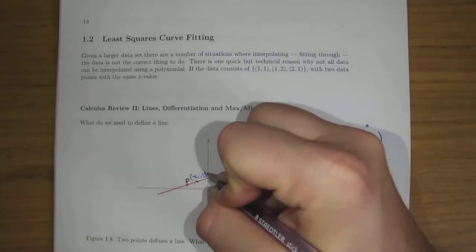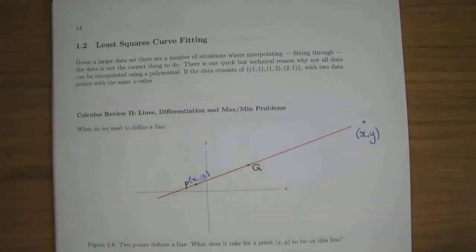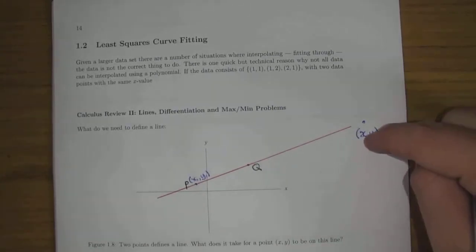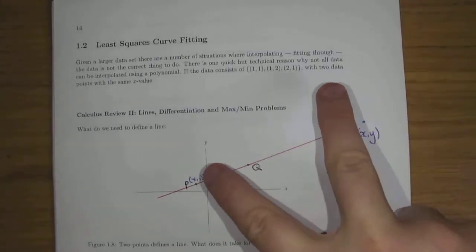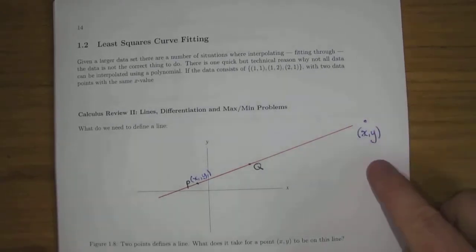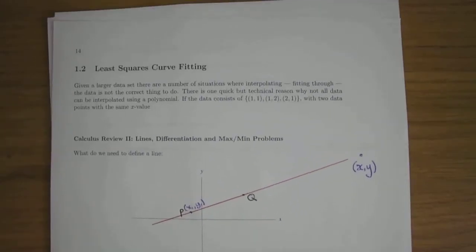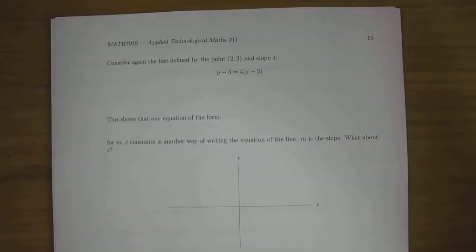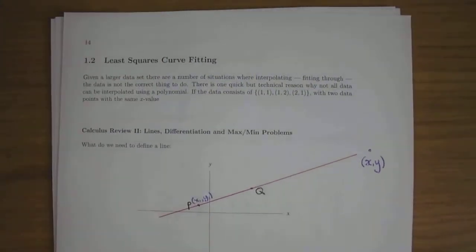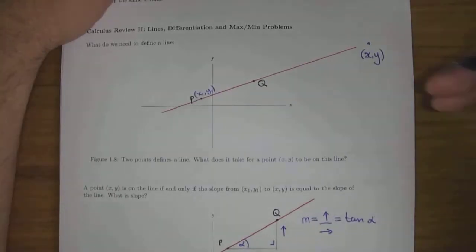So this point is on the line essentially if, taking P to be x1, y1, the slope between P and the point x, y is equal to m, the slope of the line. If the slope is bigger than m, the point is above the line; if smaller, the point is below the line. Consider the line defined by the point (2, 3) and slope 4 — let's say the slope of this is m.